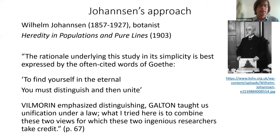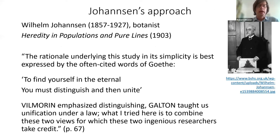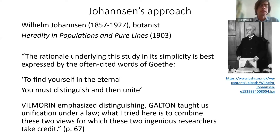Johansson ends his 1903 book on heredity in populations and pure lines, which is his most influential experimental work. After that he still had some experimental work, but he mainly wrote textbooks, encyclopedia and handbook entries, and programmatic papers. Johansson was a professor at the Royal Veterinary and Agricultural University in Copenhagen, and had worked before in the Carlsberg laboratory. He had a practical background and was concerned with questions of industrial breeding.